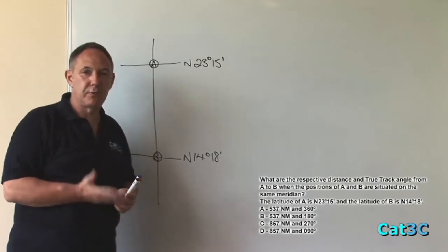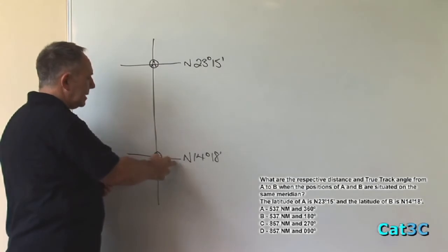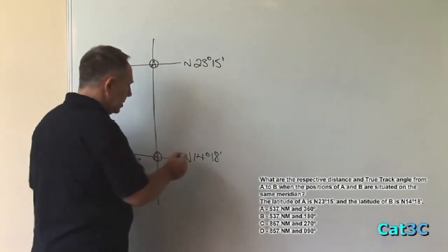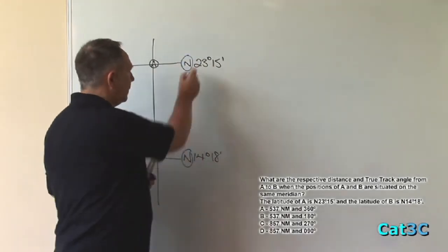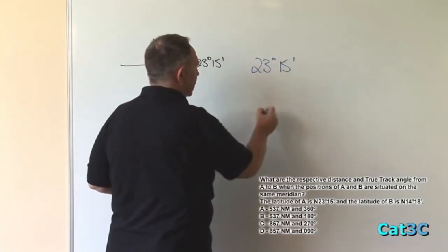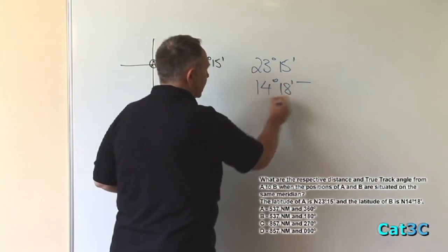However, we'll prove the actual distance by calculating the change of latitude between A and B. Given that both positions are in the same hemisphere, we subtract the lesser from the greater. So that's 23 degrees 15 minutes take away 14 degrees 18 minutes.